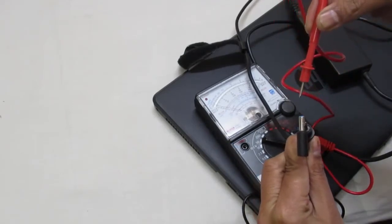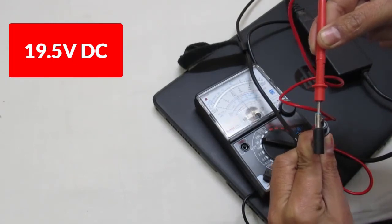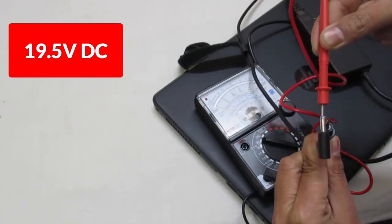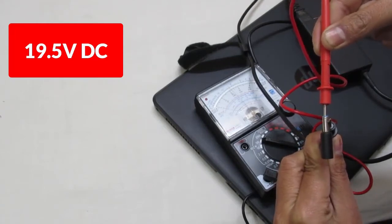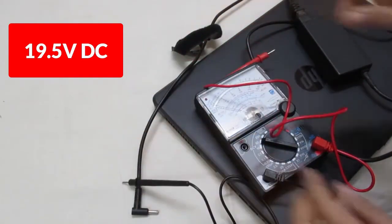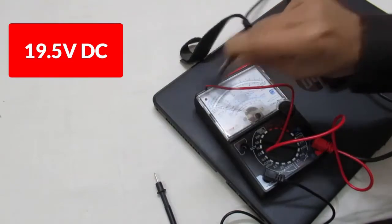Touch the negative probe on the outside of the connector and insert the positive probe, which is red, inside the connector. If your multimeter is showing 19.5 volt DC, that means your charger is working properly.